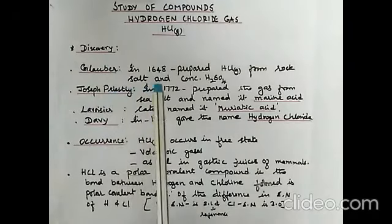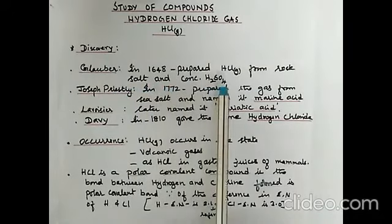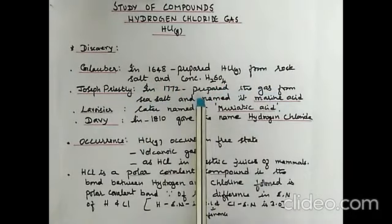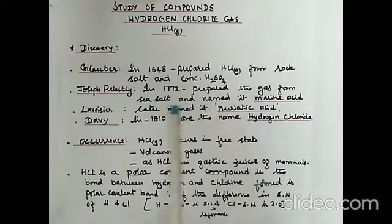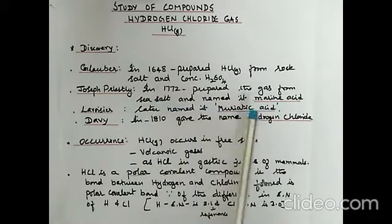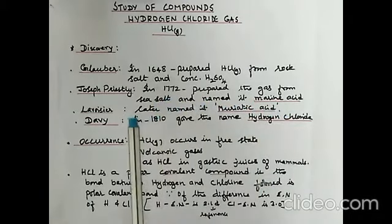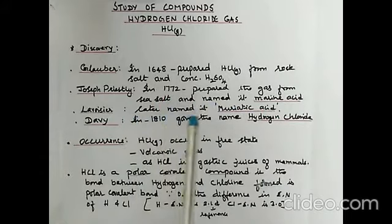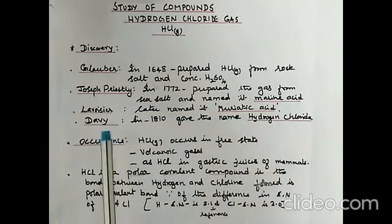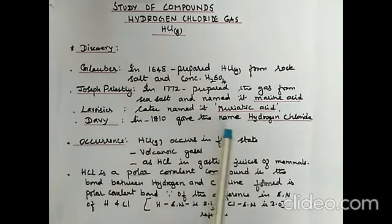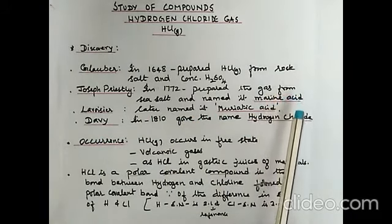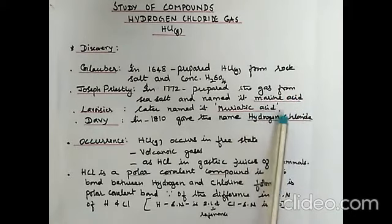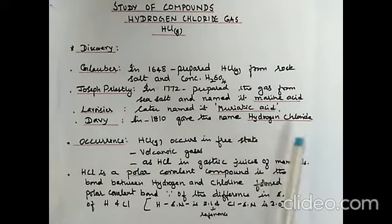Glauber in 1648 prepared hydrogen chloride gas from rock salt and concentrated sulfuric acid. Joseph Priestley in 1772 prepared the gas from sea salt and named it marine acid — sea salt is sodium chloride. Lavoisier later named it muriatic acid. Davy in 1810 gave the name hydrogen chloride. Remember the different names: marine acid, muriatic acid, and hydrogen chloride gas.